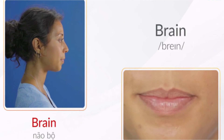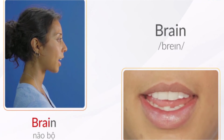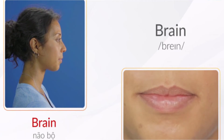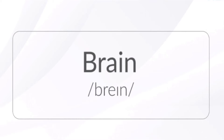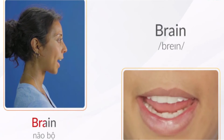Brain. Từ này có phụ âm liên tiếp B và R, đọc nối với nhau sẽ là BR. Từ này đồng thời chứa nguyên âm đôi: các bạn đọc âm E nối với âm I, âm E đọc dài hơn âm I một chút là được nhé.